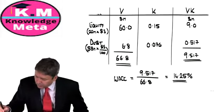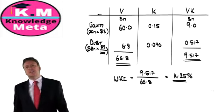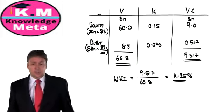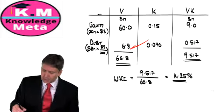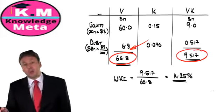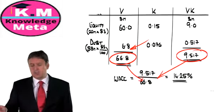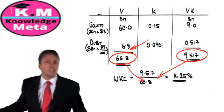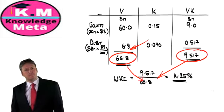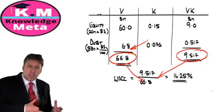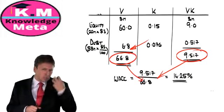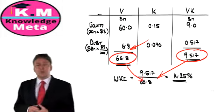I like doing the WACC this way because it's easy to visualise what's going on, and if the examiner makes it more complicated with additional components — say preference shares — you just list them all, sum the V × K column, divide by total value, and you have your WACC computation. Simple.